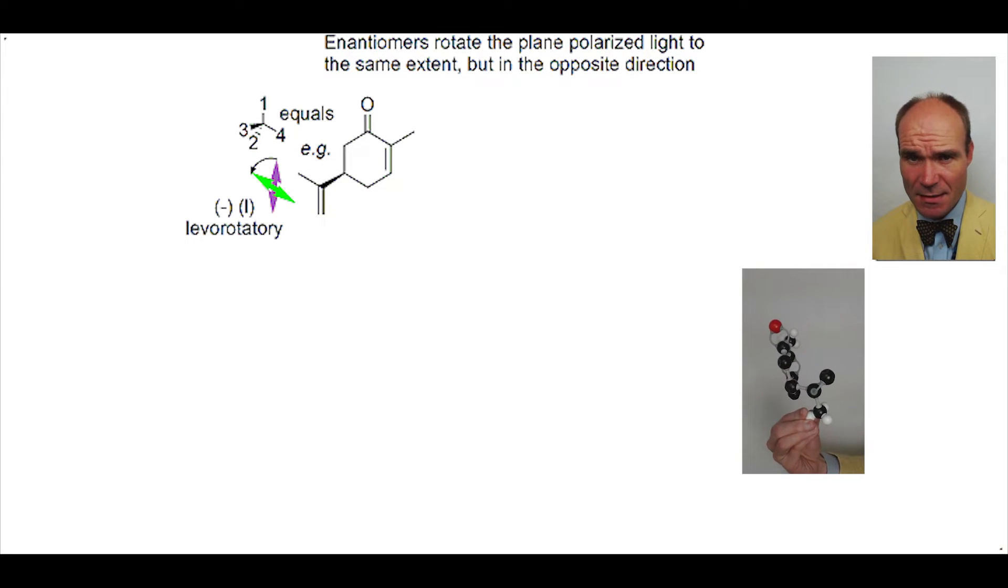This is given the descriptor minus and is described as levorotatory, or L. Note it's a small L.